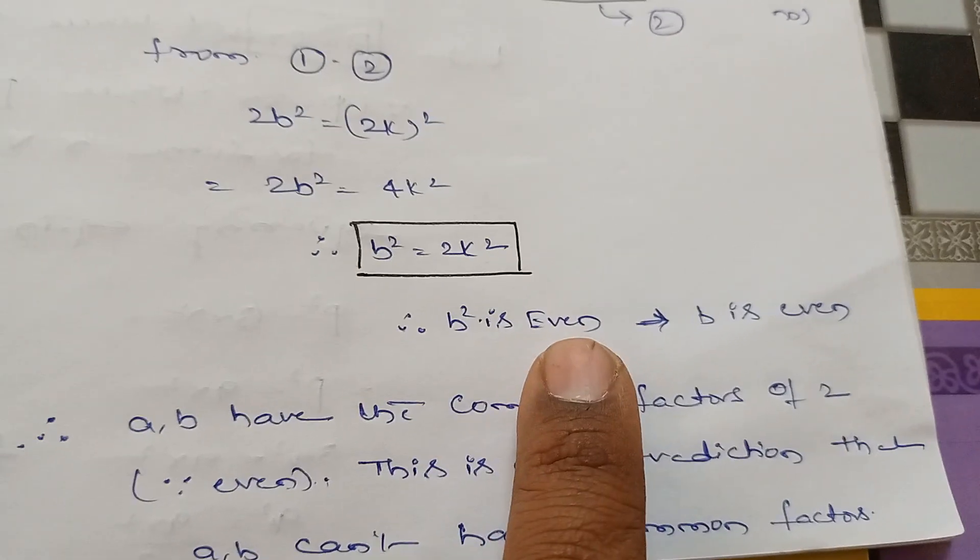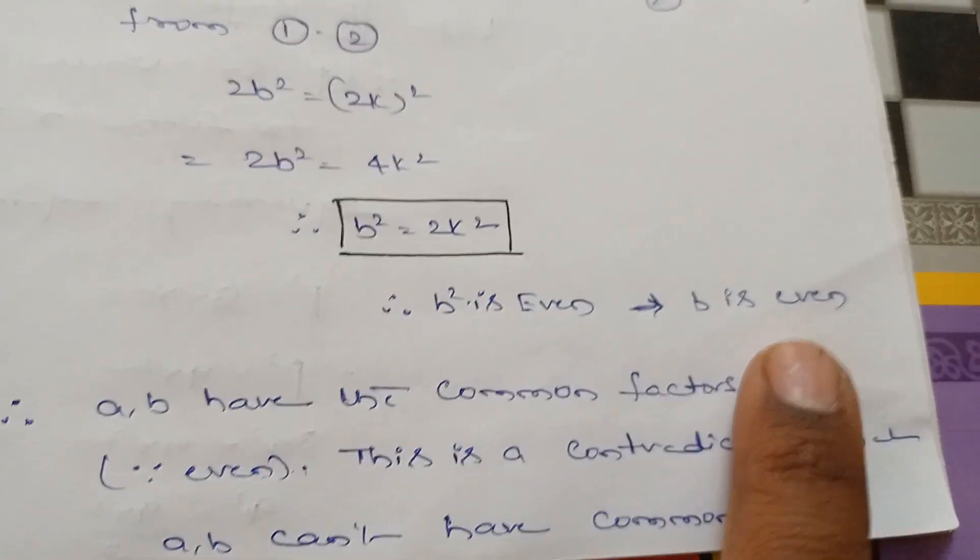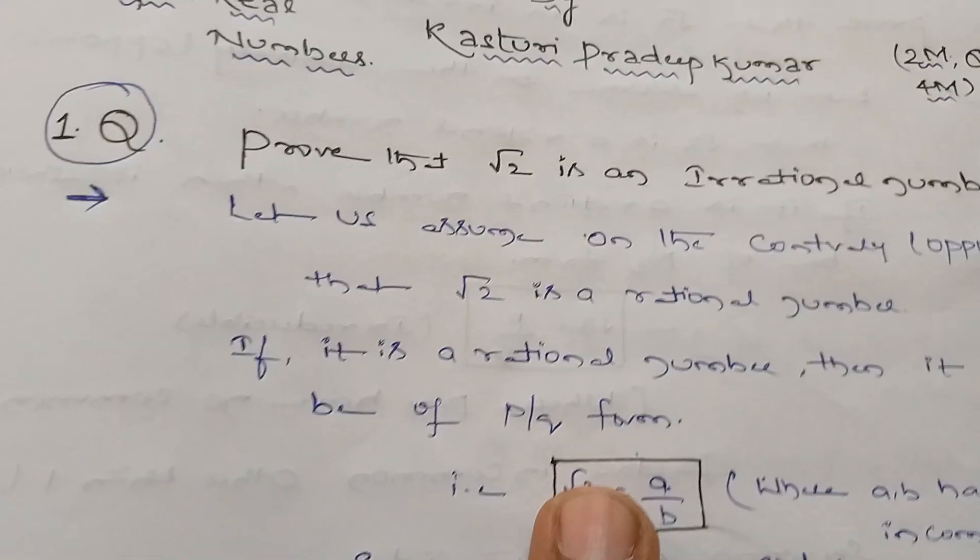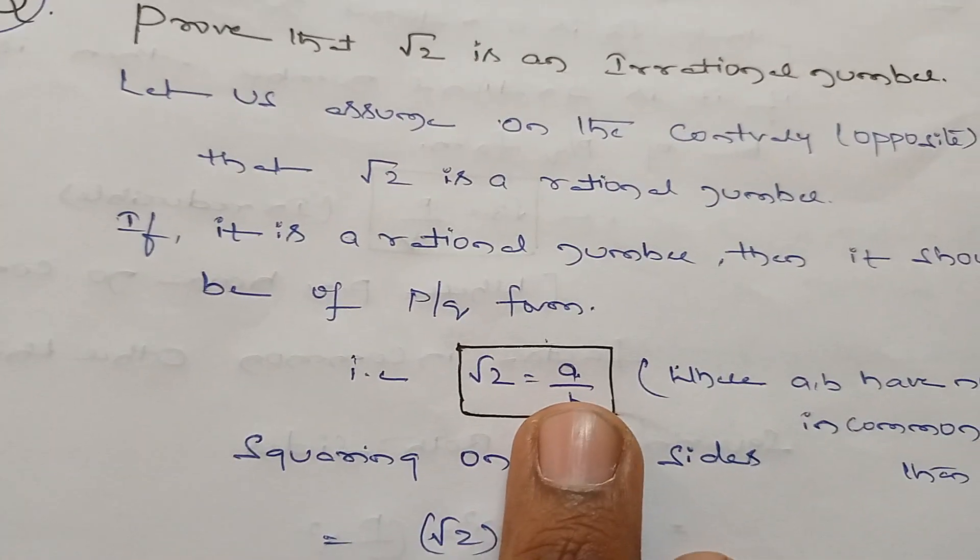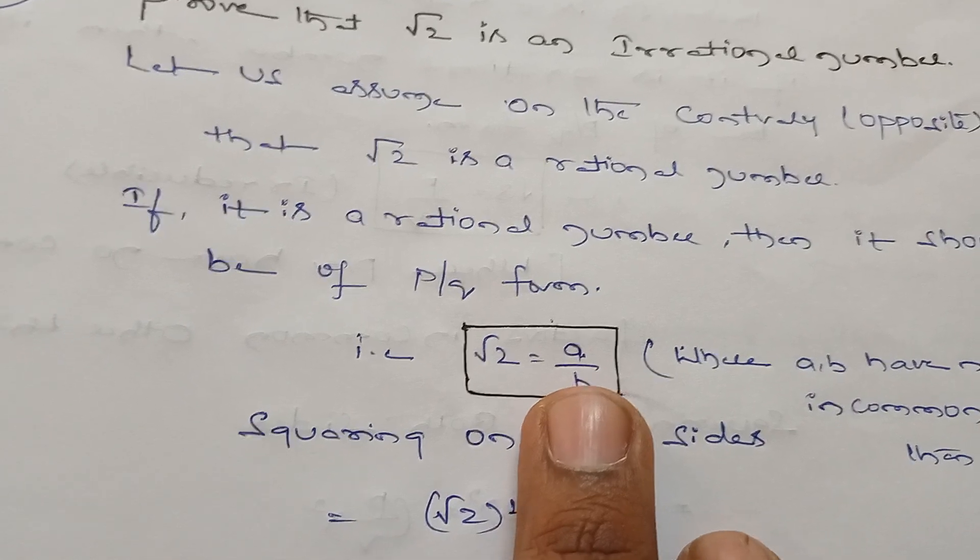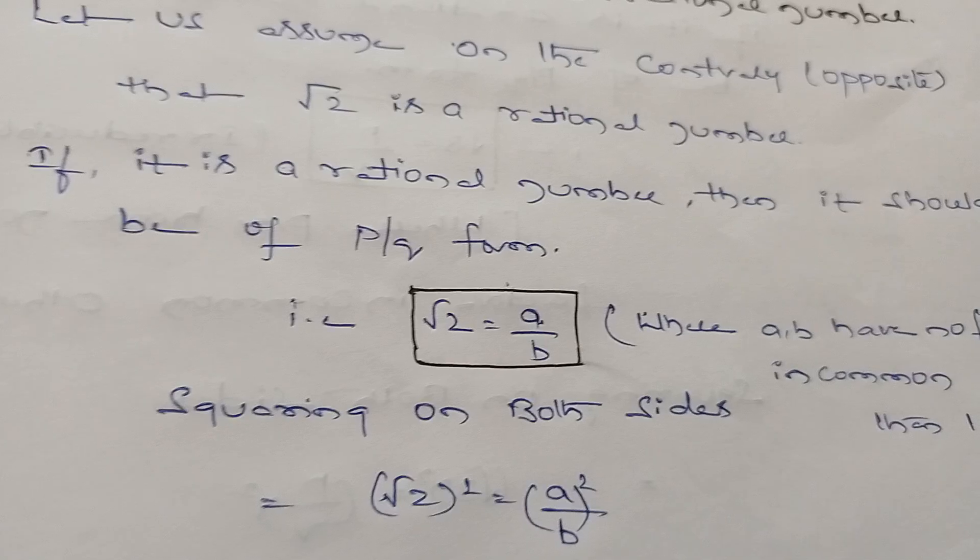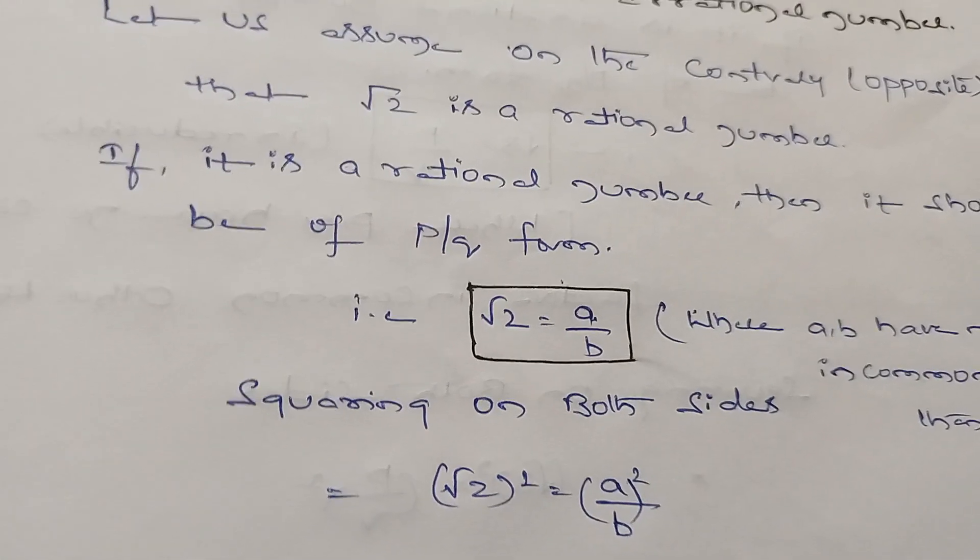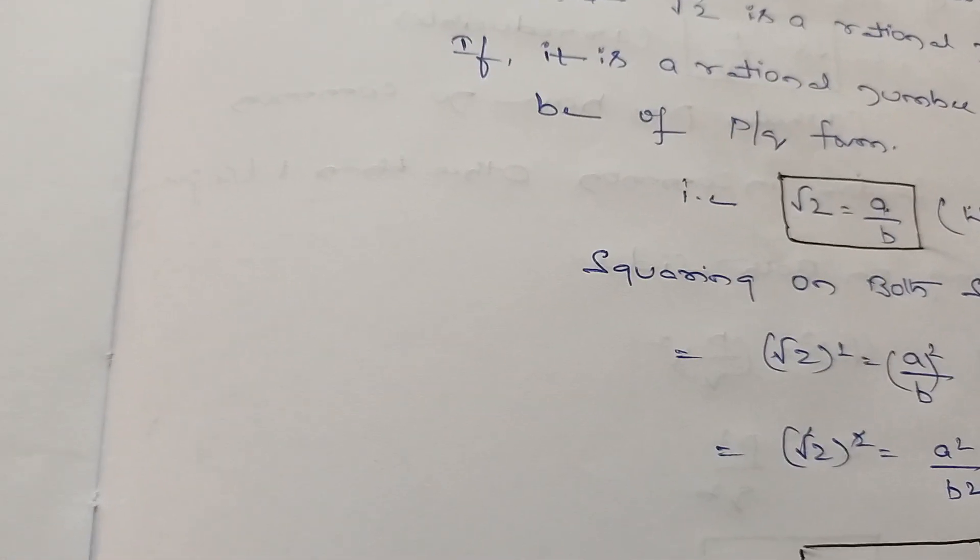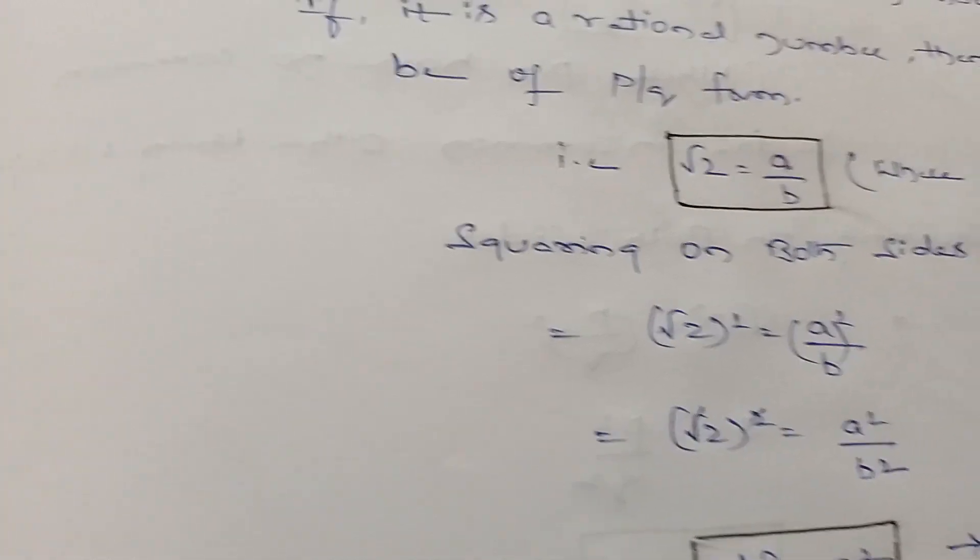But as I mentioned at the start, √2 = a/b is in irreducible form, therefore a and b have only one common factor, meaning they are co-primes. If they have only one common factor, we call them co-primes.